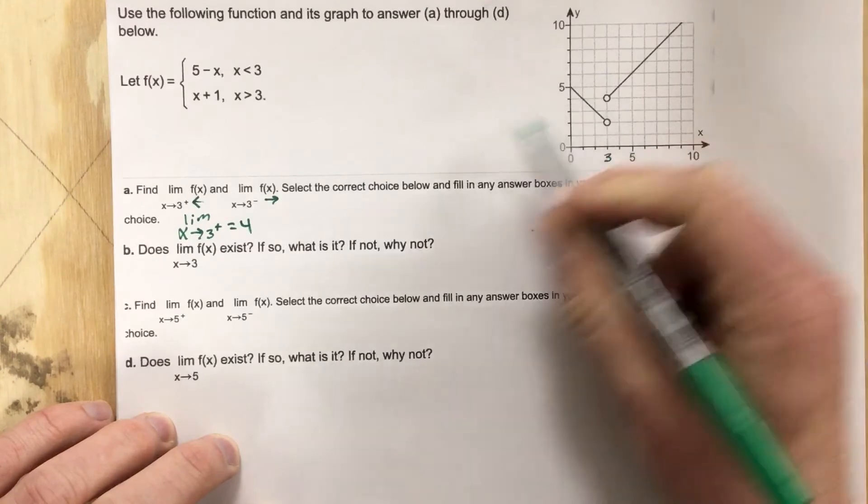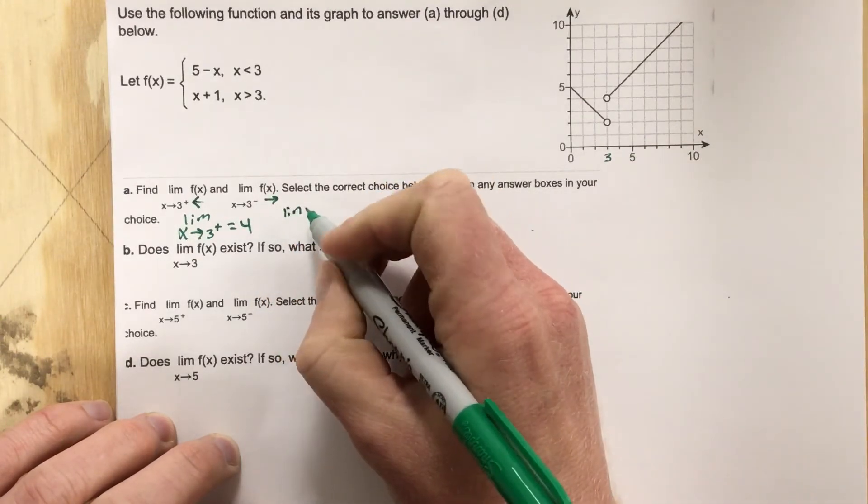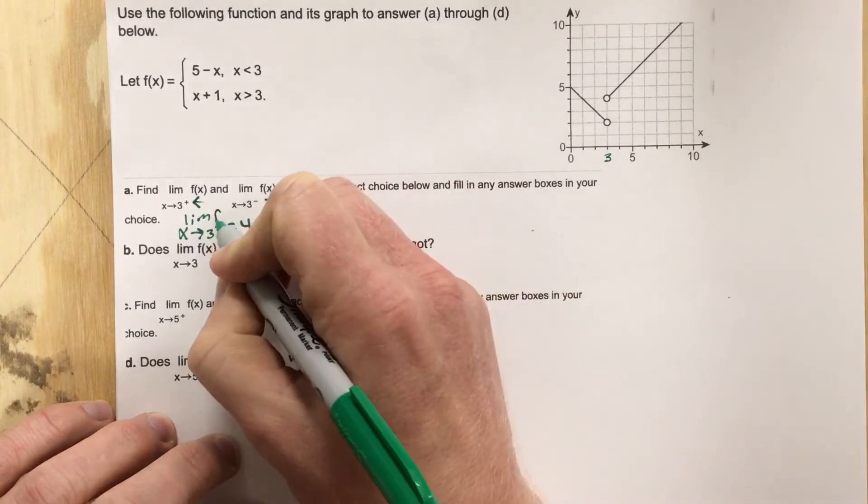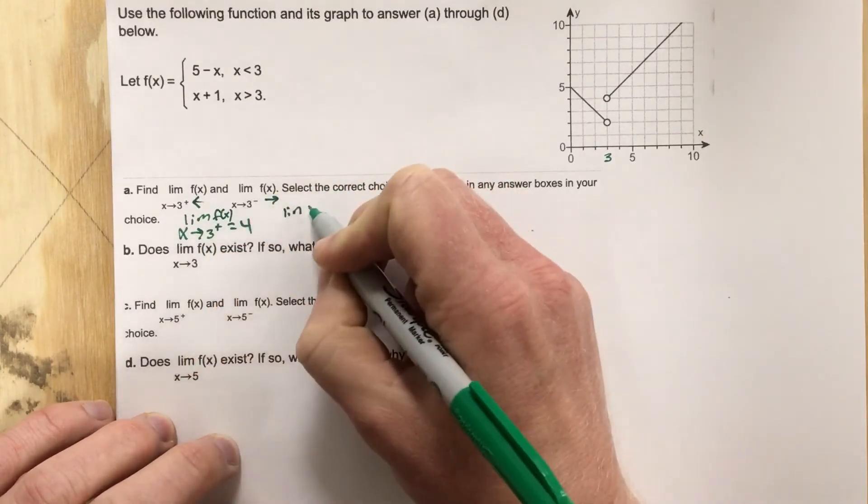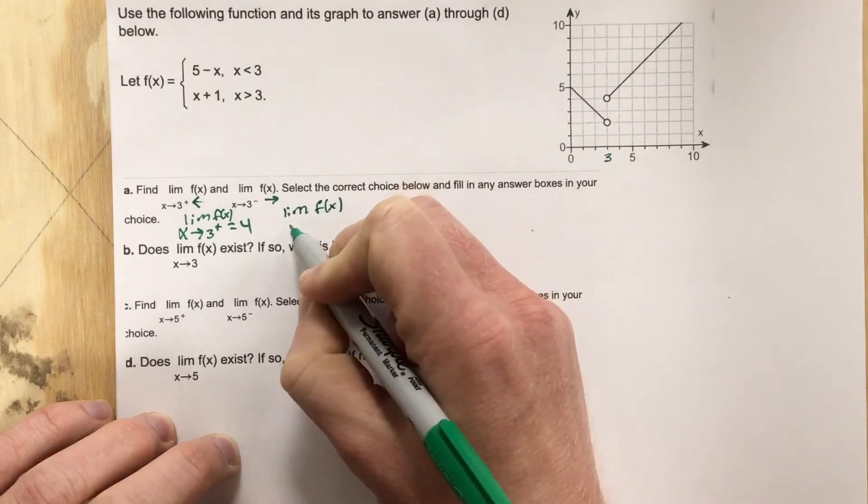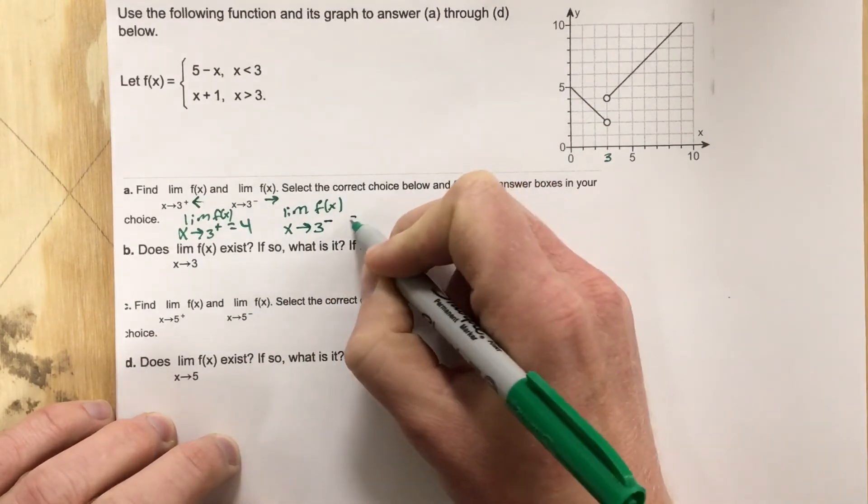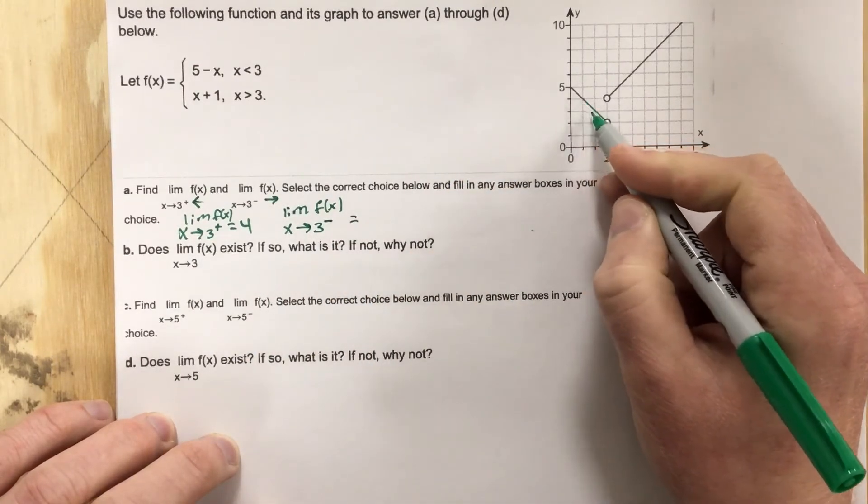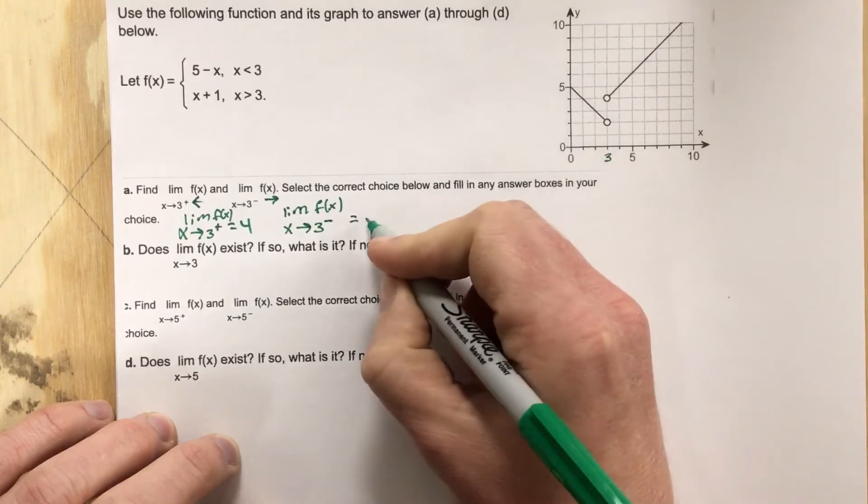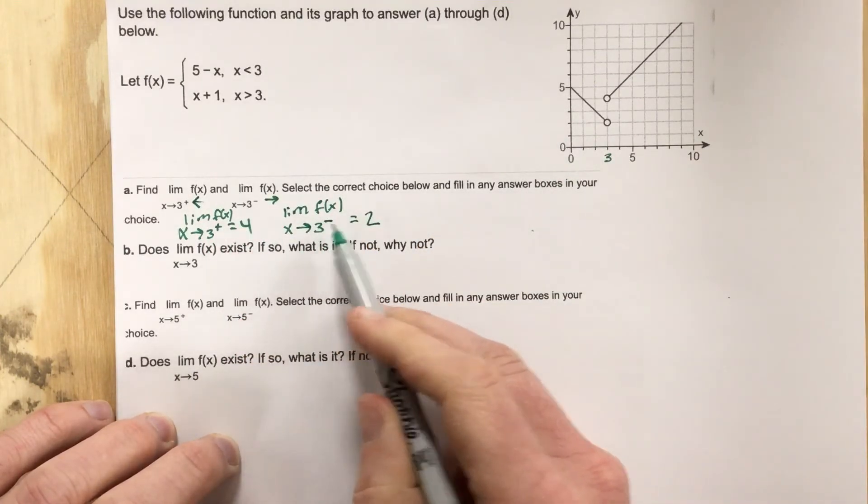And then as I approach it from the left for the next part, so the limit of the function, I should probably put f of x in here, the limit of f of x as x approaches three from the left, that equals, so as I come from the left and approach three, I'm equaling two. So the limit from the right is four and the limit from the left is two.